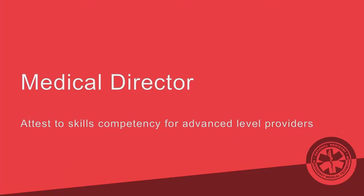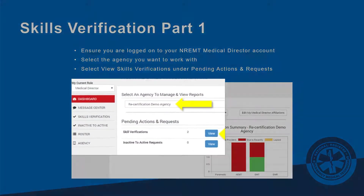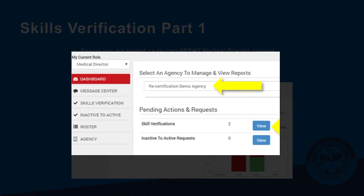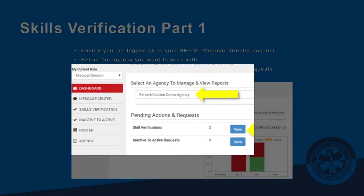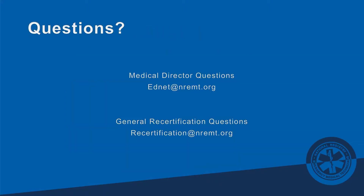For testing skills competency for advanced level providers, go back to the main dashboard and click 'View' next to skills verification after selecting the proper agency. You'll get the skills verification screen where you approve or deny and then submit. If you have any questions, please email ednet.org, or for general recertification questions, email the recertification team. Thank you and have a great day.